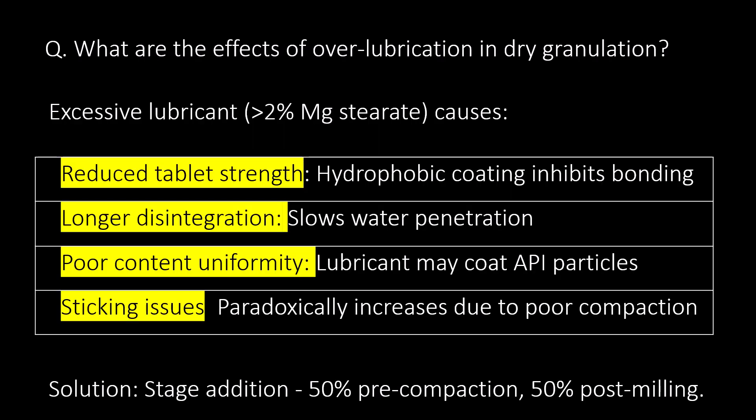What are the effects of over-lubrication in dry granulation? Excessive lubrication may cause reduced tablet strength, longer disintegration, poor content uniformity, and sticking issues. To avoid this, we can add 50% of the lubricant at the pre-compression stage and 50% at the post-milling stage of dry granulation.